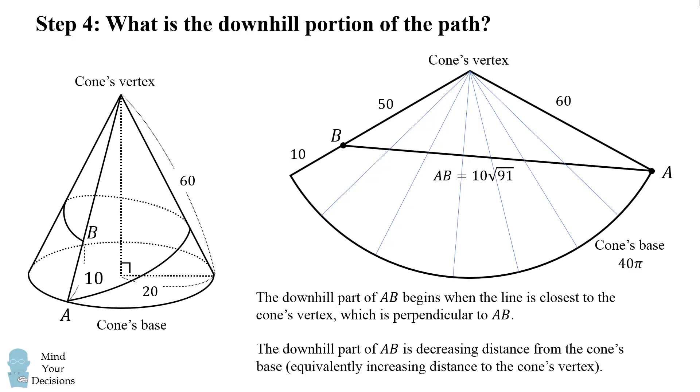Furthermore, the downhill part of AB begins when the line is closest to the cone's vertex, and then it'll be perpendicular to AB. So this will be the point at which the track goes from going uphill to going downhill.